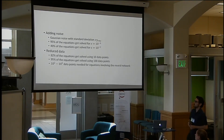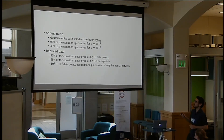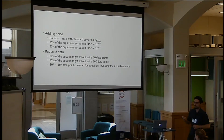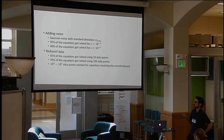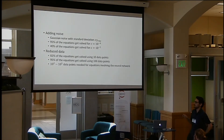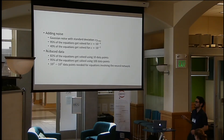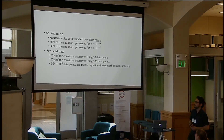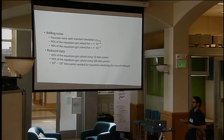We also check the effect of adding Gaussian noise with a standard deviation of epsilon times Y_RMS, where Y_RMS is the RMS of the value of the function before adding noise. With an epsilon of 10 to the minus 4, we are able to solve almost all equations. Even with percentage-level noise, we still solve 40% of them. With only 10 data points we solve 82% of equations, and with 100 data points we solve 95%. For complicated equations requiring the neural network, more data was needed, but even then, some were solvable with only 100 or 1000 data points.